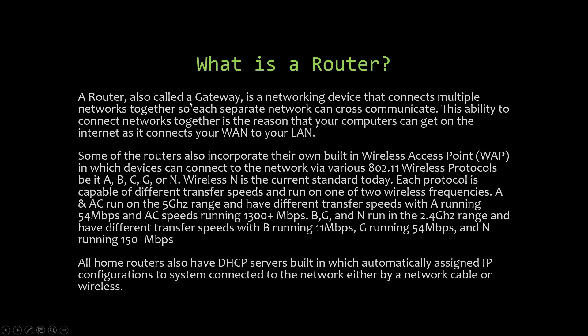A router — also called a gateway — is a network device that connects multiple networks together so each separate network can cross-communicate. You must have a router or gateway to connect to the internet. This is the reason your computer can get online: it connects your WAN to your LAN.